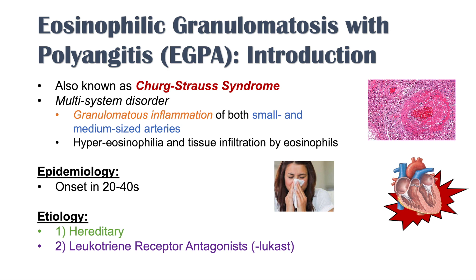There are also associations with certain medications. Leukotriene receptor antagonists — medications with the suffix '-lukast,' such as montelukast (Singulair) — are asthma medications that actually increase the risk for Churg-Strauss. Other medications that can increase risk include steroids and cocaine.